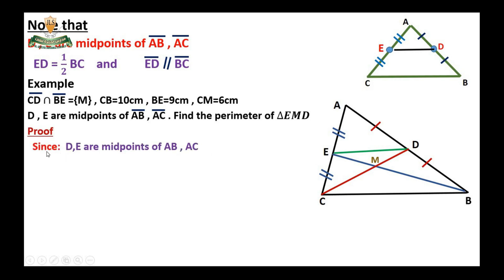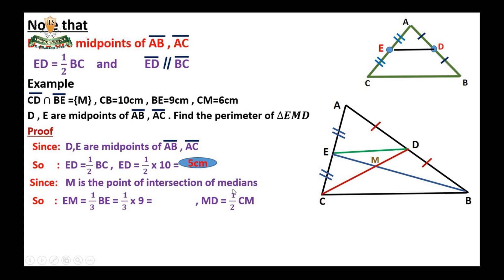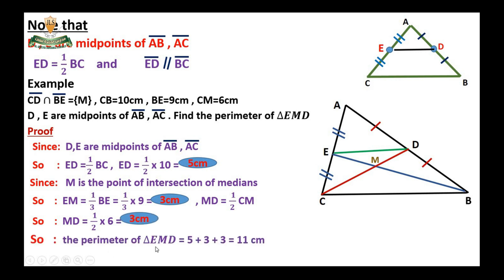Proof: Since D and E are midpoints of AB and AC, ED equals half of BC equals one-half multiplied by 10 equals 5 cm. Since M is the point of intersection of the medians, EM equals one-third of BE equals one-third multiplied by 9 equals 3 cm. MD equals one-half of CM equals one-half multiplied by 6 equals 3 cm. Finally, the perimeter of triangle EMD equals 5 plus 3 plus 3 equals 11 cm.